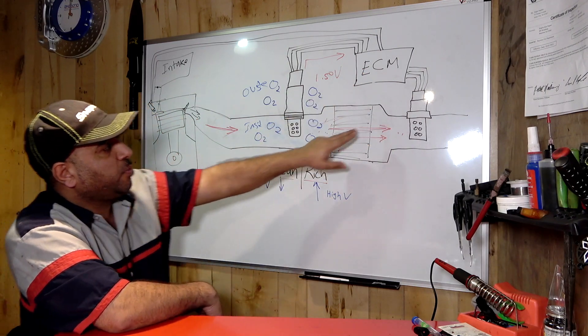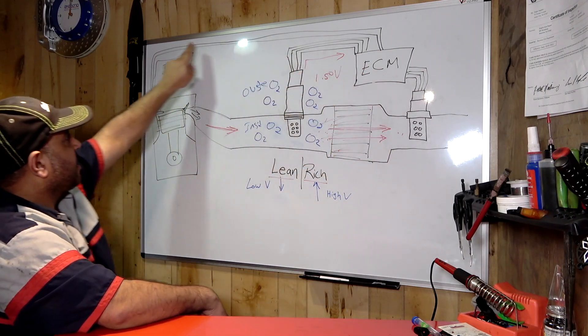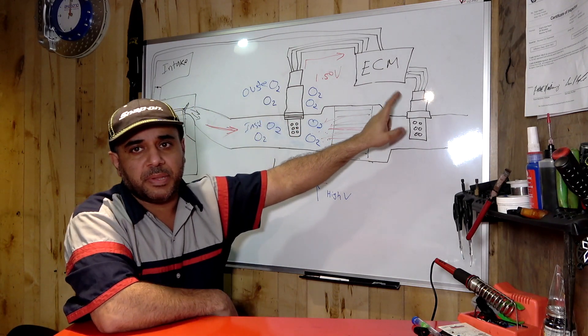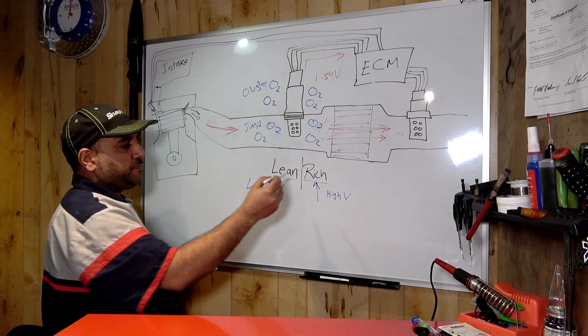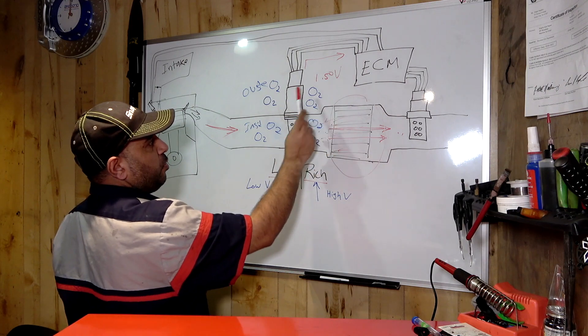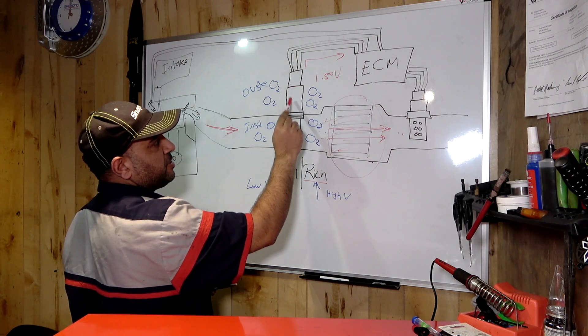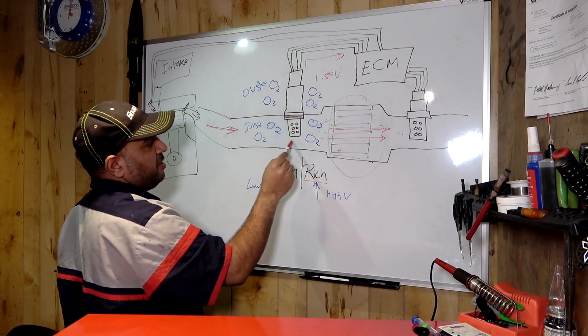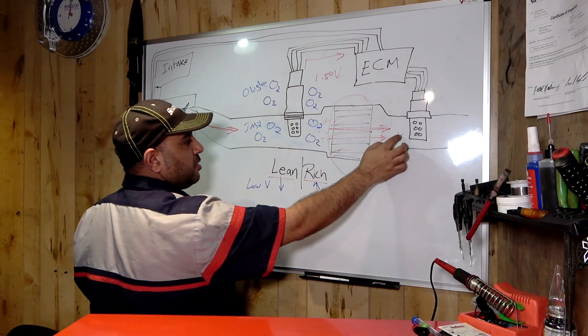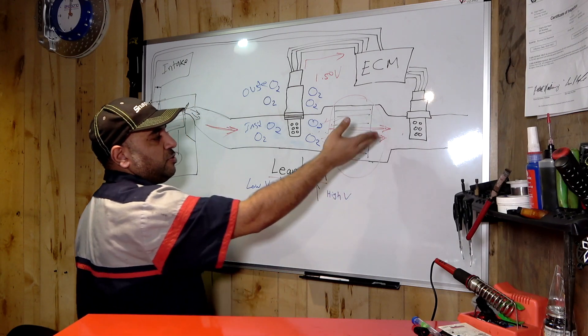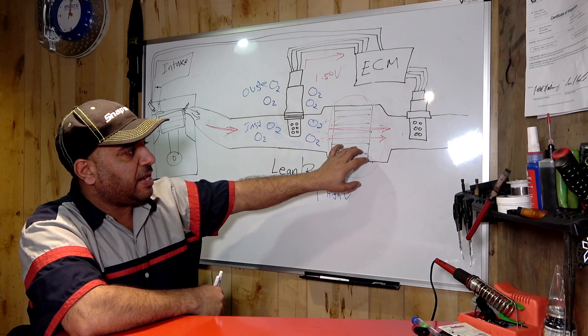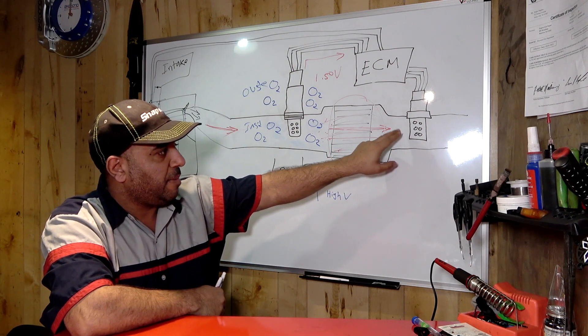This also gives a voltage, a reference signal to the ECM, but this one does not control your fuel here. This one is simply to determine if your catalytic converter is doing its job. The computer will compare the signal from this sensor. The job of this sensor is to determine if your catalytic converter is good or bad.